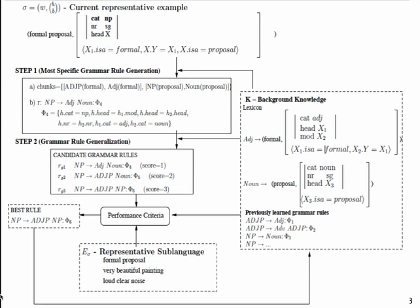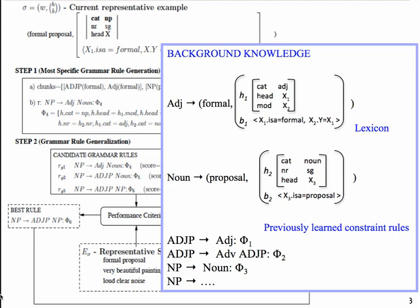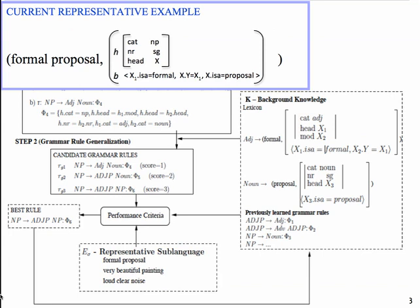This algorithm assumes you have representative examples. You start with one example, learn a rule, add it to the set of already-learned rules, and continue iteratively. Starting with a current example, using robust parsing and background knowledge — which contains the lexicon and ontology — you generate a more specific rule. From this specific rule you generalize, producing a set of candidate rules. Based on a performance criterion using the representative sub-language for generalization, you choose the best one and add it to background knowledge. To give a concrete example: we start with the background knowledge assuming 'formal' is an adjective and 'proposal' is a noun, and we've already learned that an adjectival phrase is an adjective, and a noun phrase can be a noun.